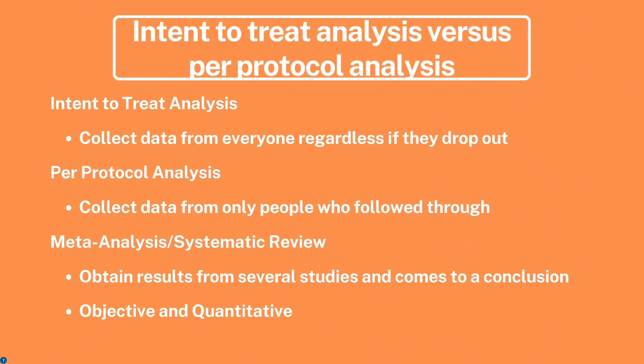The per protocol analysis collects data only from people who followed through. So the difference is: intent to treat uses data from everyone who joined the study, while per protocol only collects data from participants who followed the directions thoroughly. For a meta-analysis or systematic review, you obtain results from several studies and come to a conclusion — it is objective and quantitative.